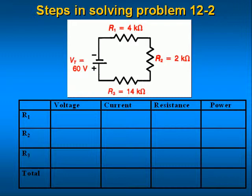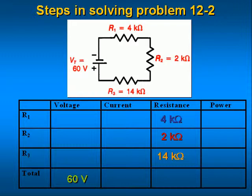The first step is to enter the data that you know. This would be the power supply voltage of 60 volts and values of all the resistors: R1 equals 4k ohms, R2 equals 2k ohms, and R3 equals 14k ohms.